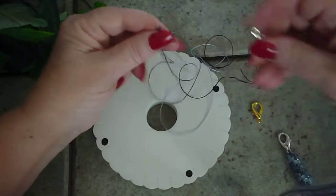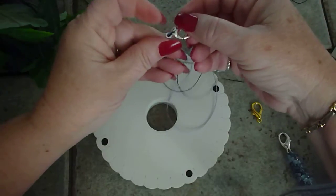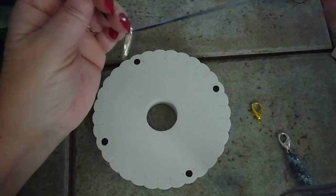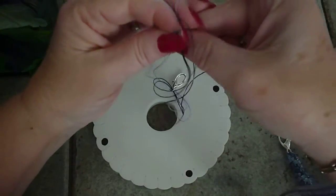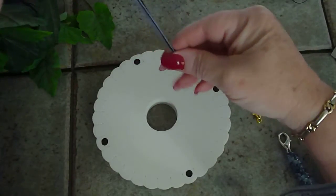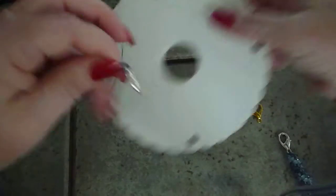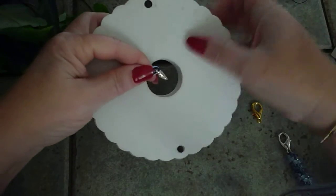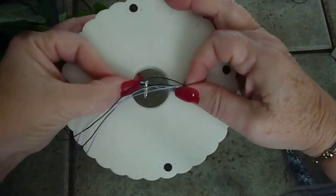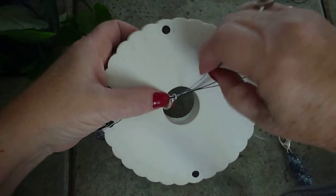So we're going to start by taking the four cords and place it through the hole in the lobster claw. And then you're going to find the center, give it a little pinch, and then place the lobster claw in the center. Kind of hold it with your thumb. And then you're going to spread out your cords.